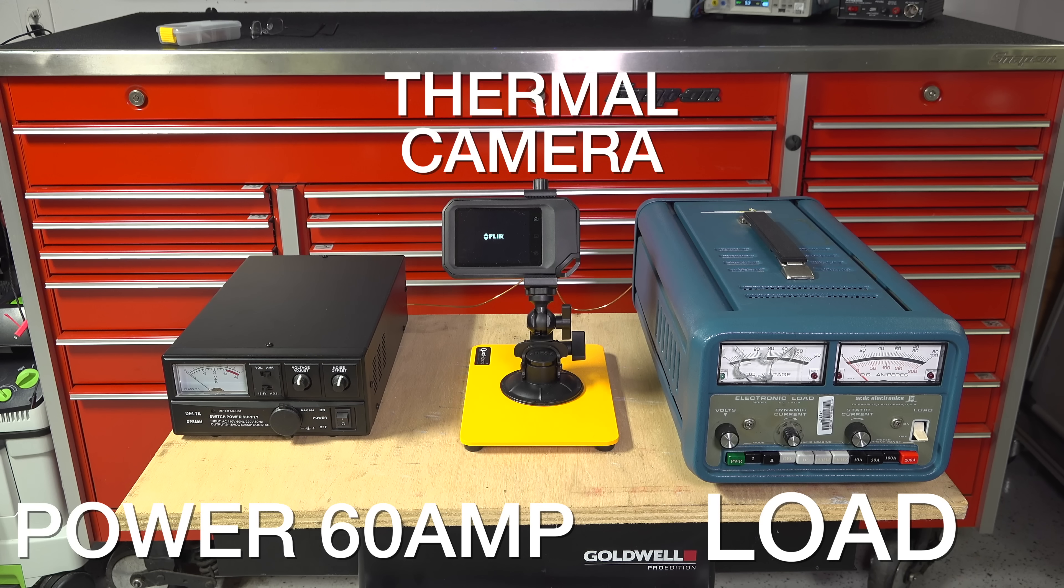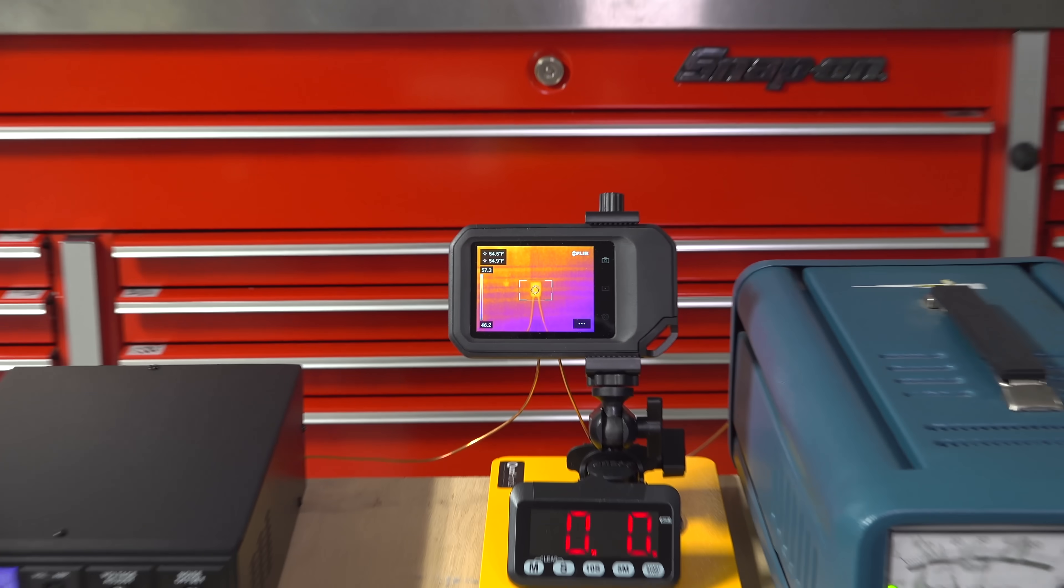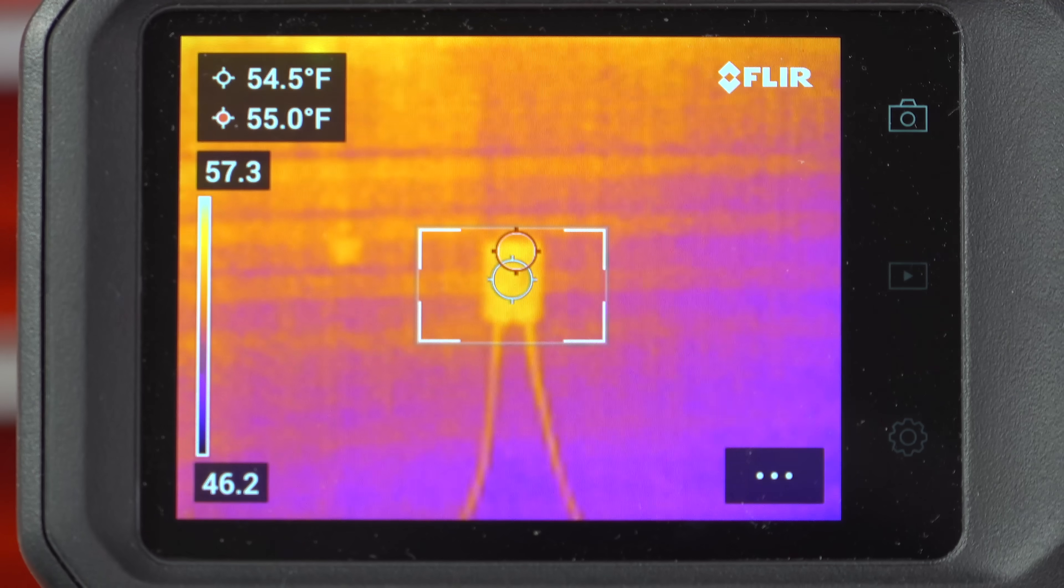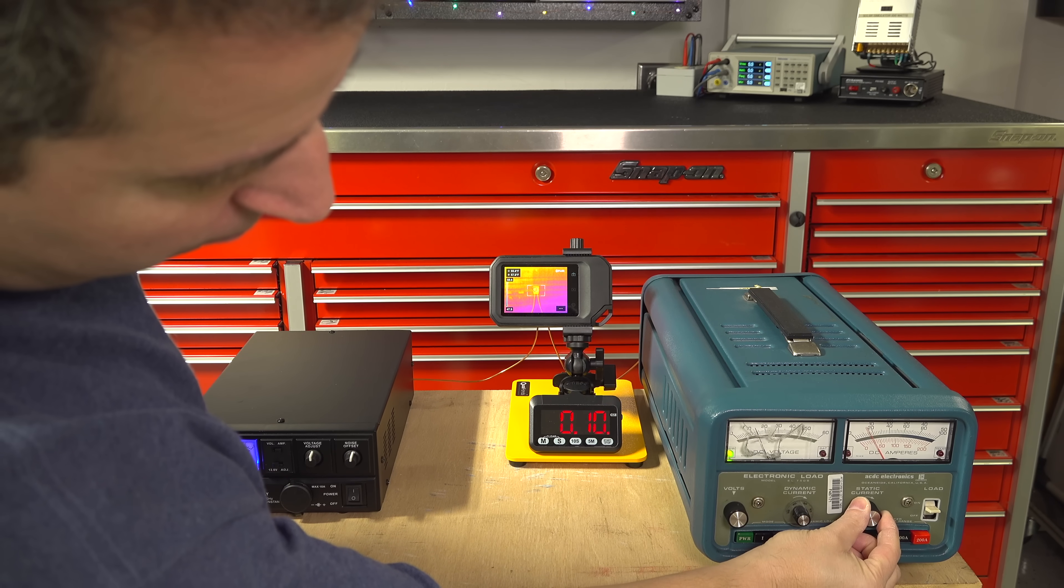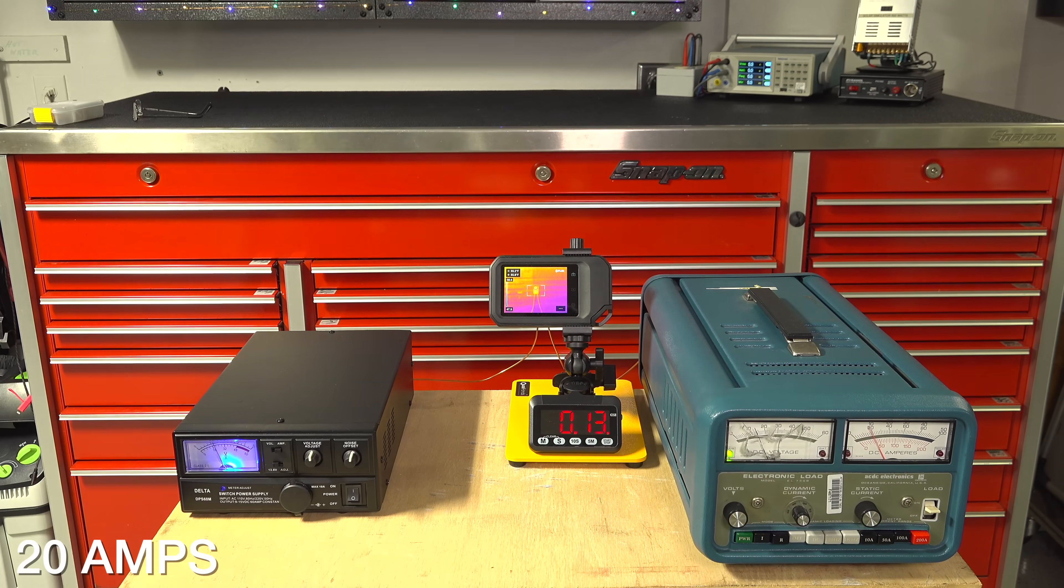And by adding a thermal camera in the middle, we'll be able to see how hot that connector actually gets. And this camera can identify the hottest part of anything it sees inside this square. So right now, it's 55 degrees Fahrenheit. For our starting point, I'm going right to the maximum rating for this connector which is 20 amps.